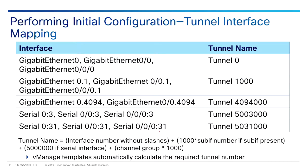Here is the initial configuration tunnel interface mapping: if it's GigabitEthernet 0/0/0, we use tunnel 0; GigabitEthernet 0/0/1 maps to tunnel 1000, and so on. Remember, the tunnel interface number must match the WAN interface used. You'll also notice that Ethernet interfaces start at 4000 and serial interfaces start at 5000, and there's a formula for determining what that number is going to be.